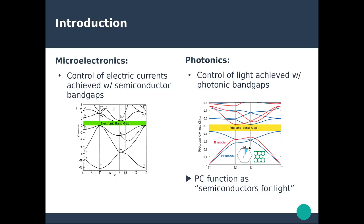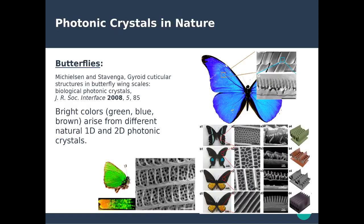Photonic crystals are also found in nature. Some of the most well-known examples are the scales from certain butterflies. Those scales show very interesting periodicity — periodic elements repeating themselves — giving rise to very specific colors. Light can be transmitted or totally reflected at a specific wavelength. In this particular case, light is entirely reflected in the blue region and transmitted in all other regions. Different butterflies exhibit different types of periodic structures, giving rise to different colors of butterfly wings.